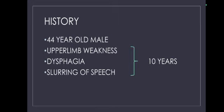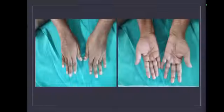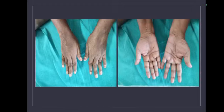Here is a 44-year-old gentleman who presents with complaints of upper limb weakness, dysphagia, and slurring of speech for the last 10 years. He has got wasting of both his forearms and hands.